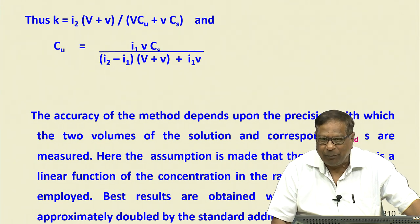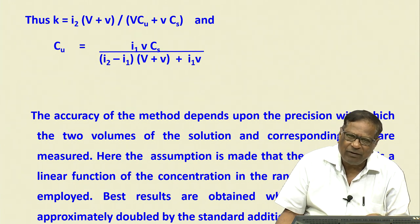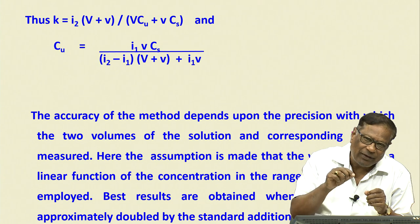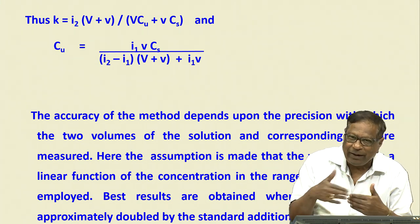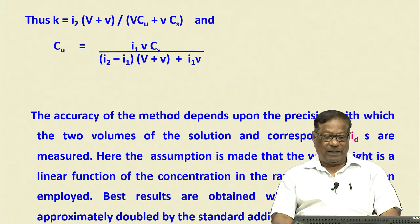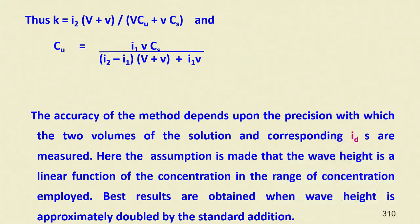The standard addition method is widely practiced. One advantage is that the standard is added to the same matrix as the unknown, so the standard is subjected to the same interferences from other matrix components. The accuracy depends on the precision with which the two volumes and corresponding diffusion currents are measured. The assumption is that wave height is a linear function of concentration in the range being measured.